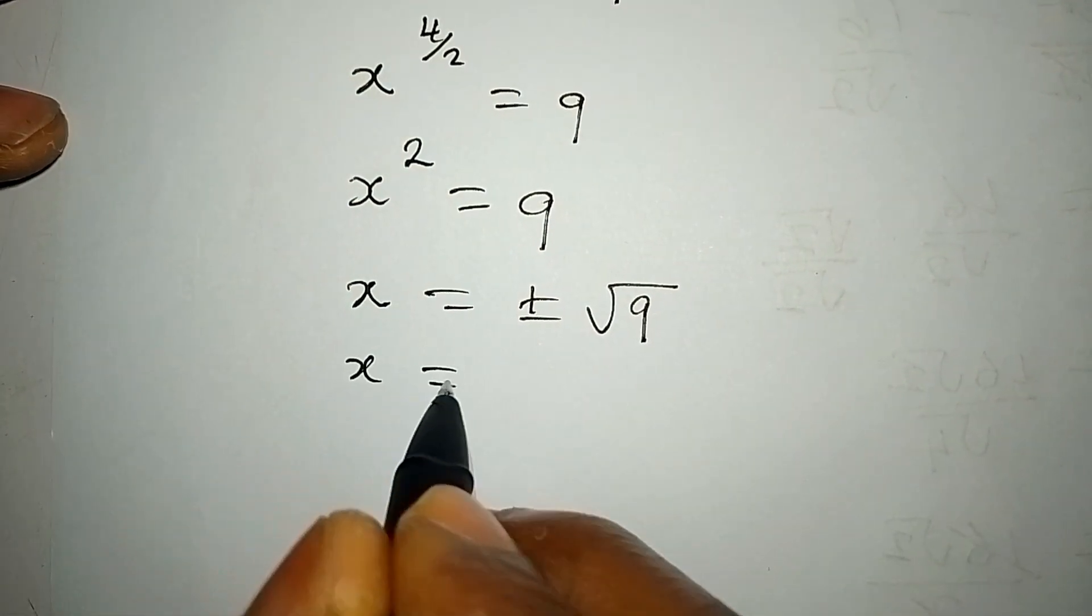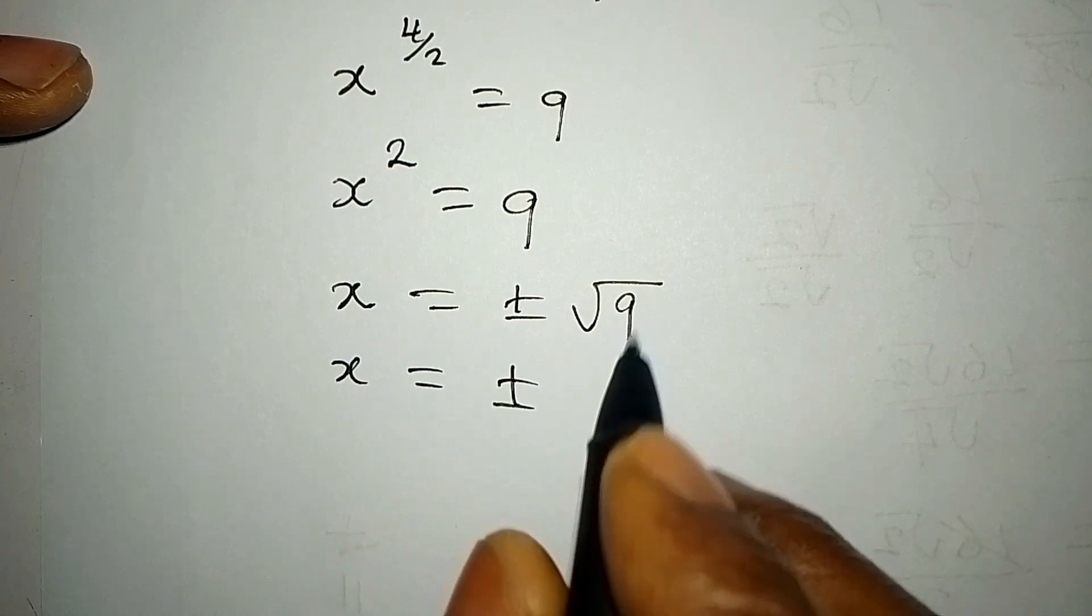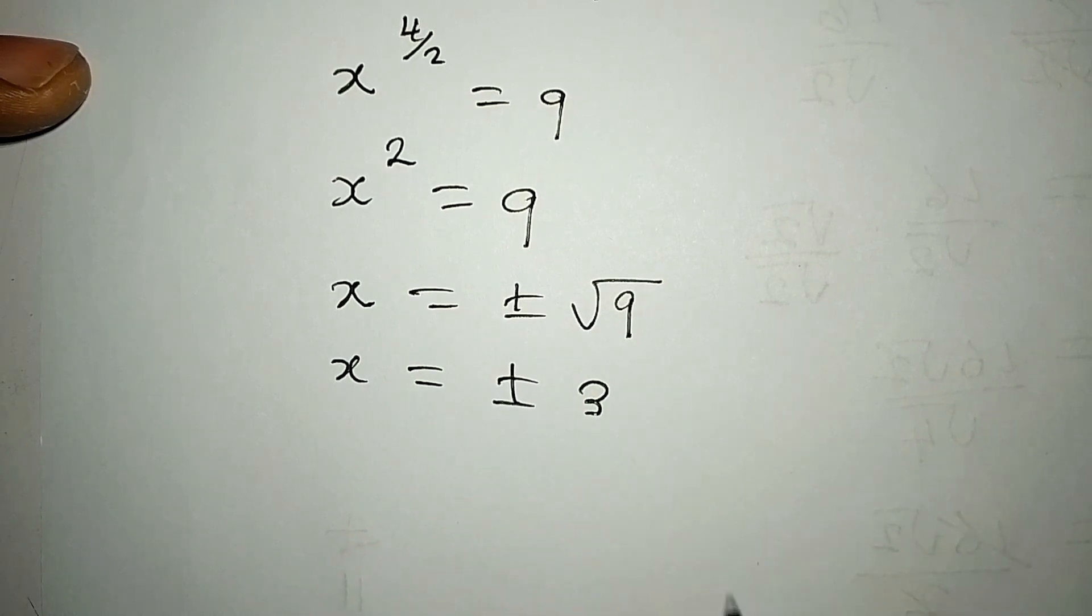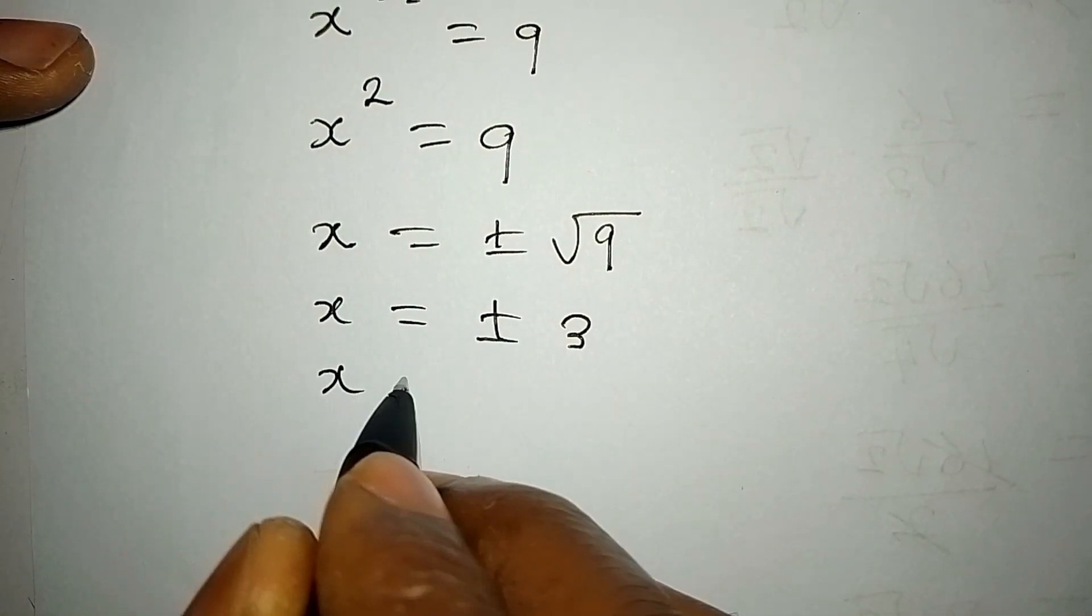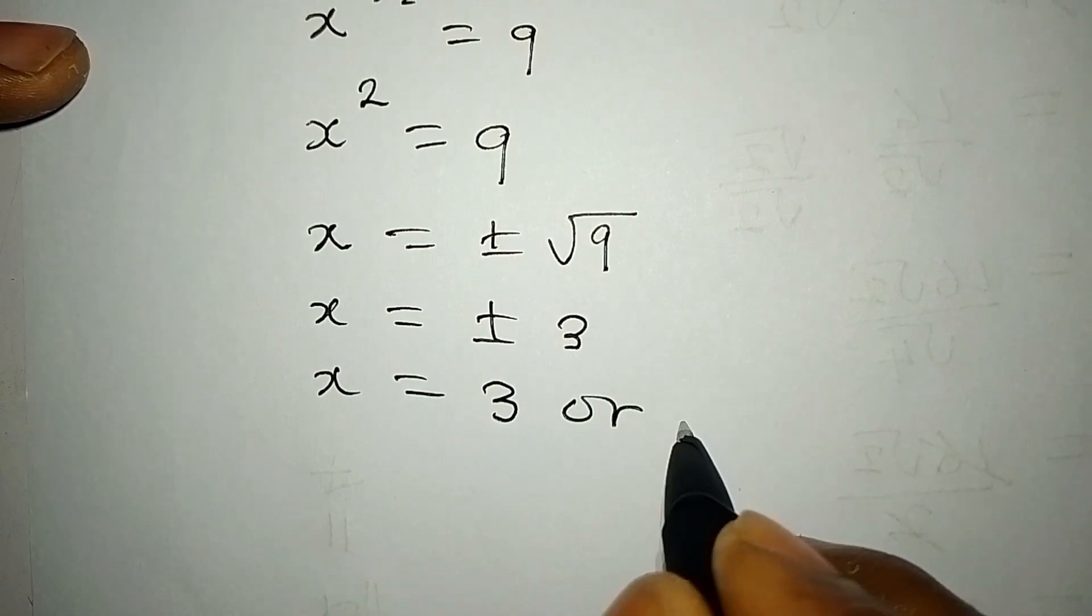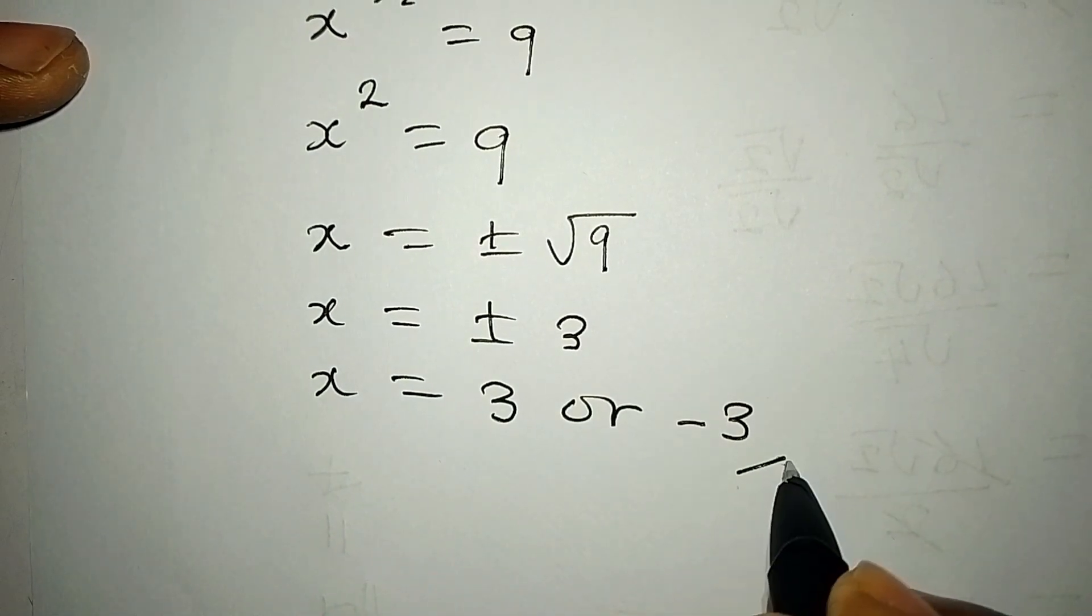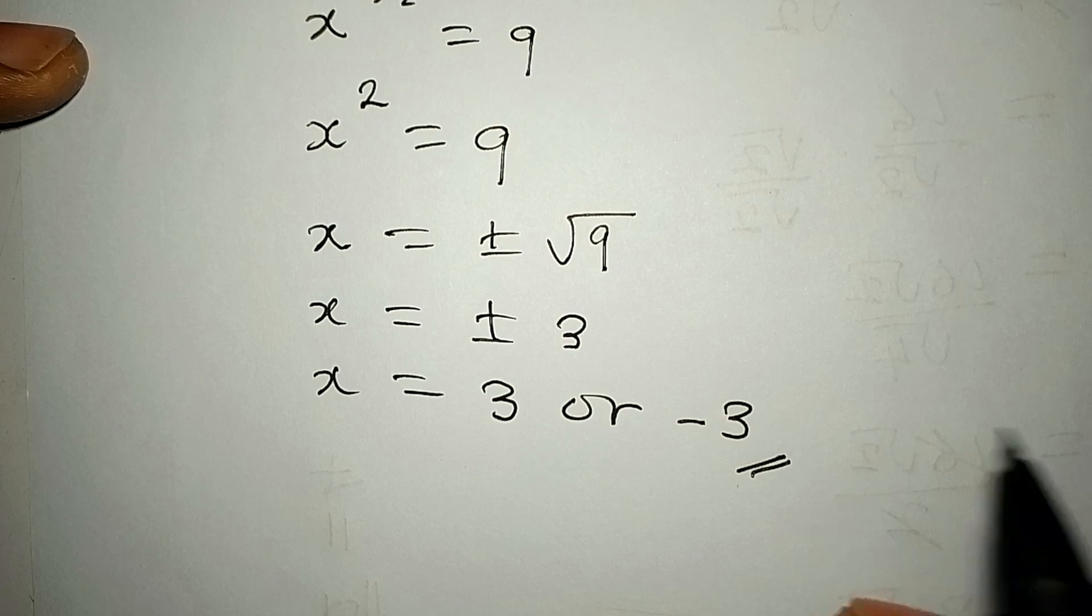Now x is equal to plus or minus, we have square root of nine and it's three. This means that x is equal to three or negative three. So this will be the value of x.